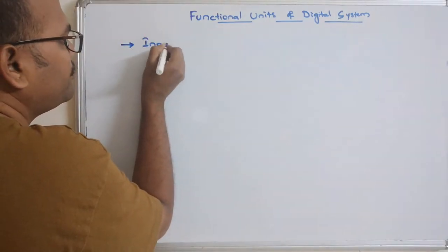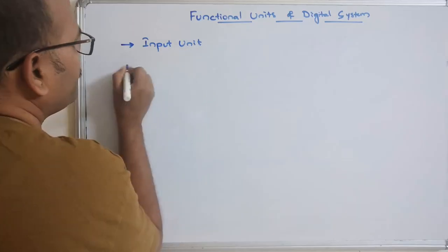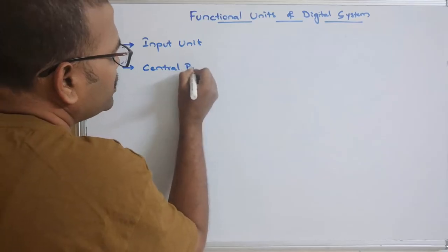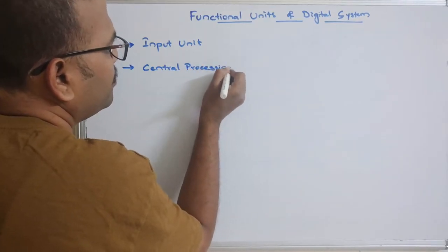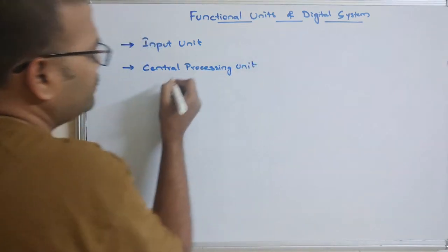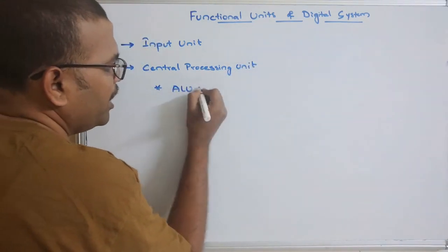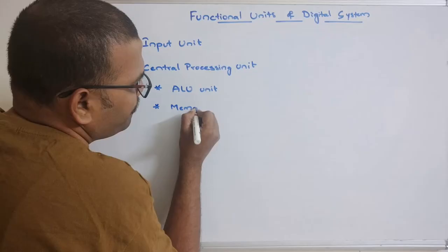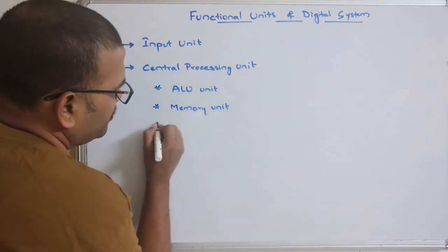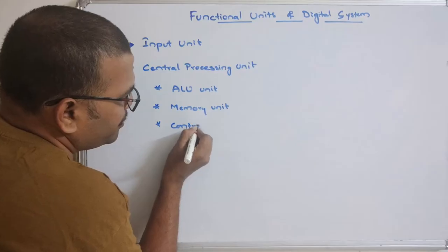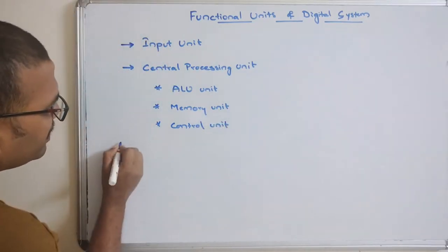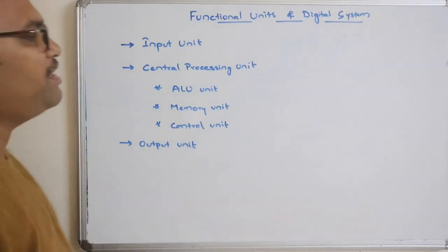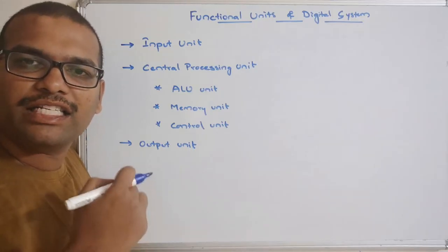There are different functional units. One is the input unit, the central processing unit — and within the central processing unit there is the ALU unit — the memory unit, the control unit, and the output unit.